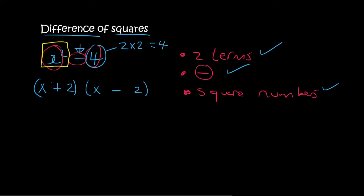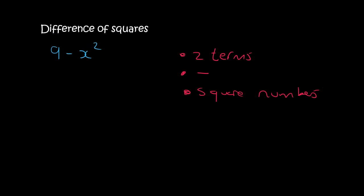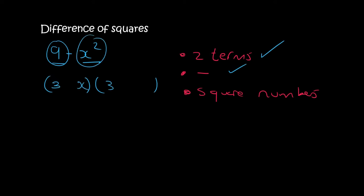Let's practice. Do we have two terms? Yes. Are they separated with a minus? Yes. Is each one a square number? Well, 3 times 3 is 9, and x times x is x squared — so we can go ahead and open our brackets. 9 was first, so you put a 3 and a 3; then x squared, so we put x and x; and then a plus and a minus.